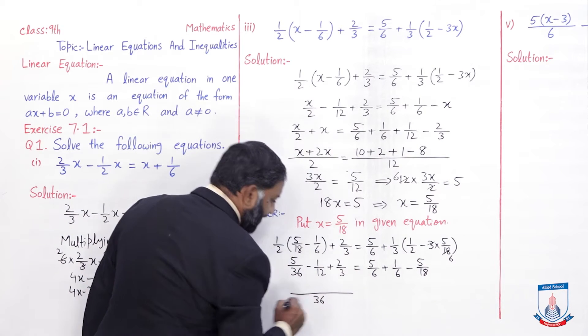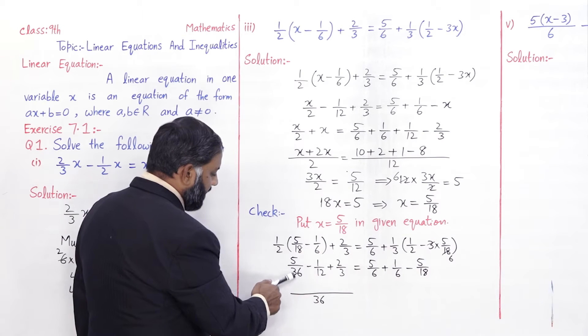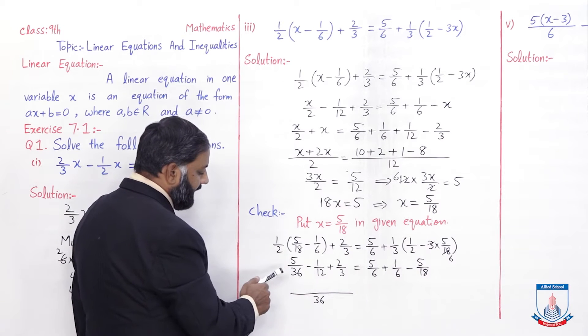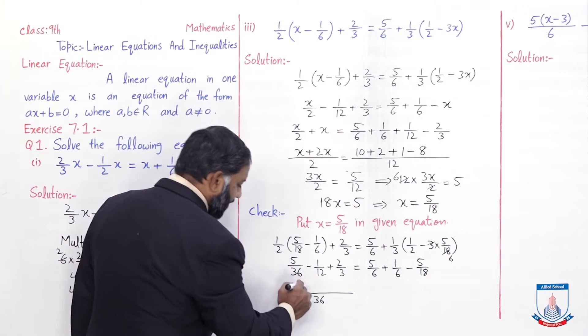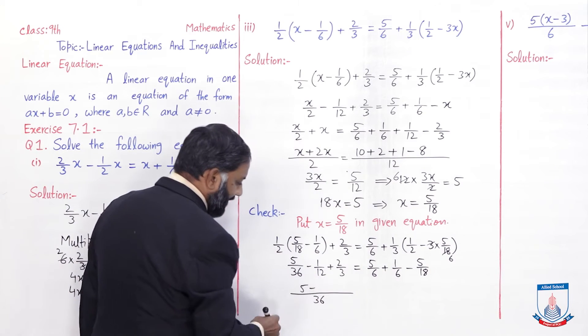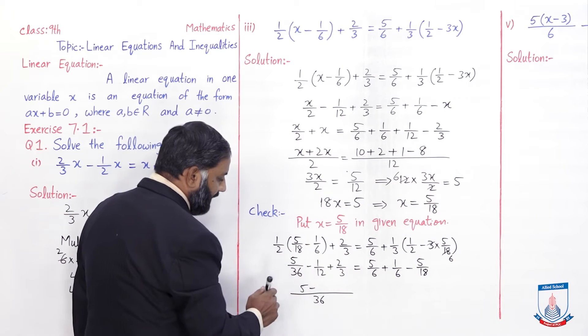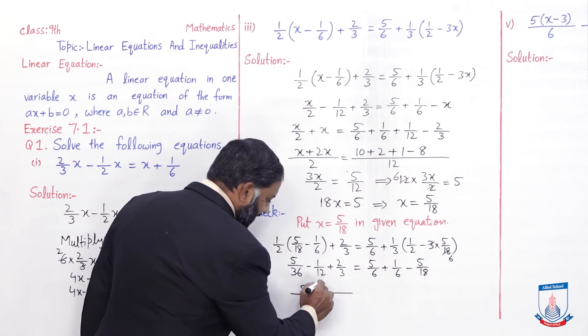LCM 36 aa jayega. Left side: 36 divided by 36 equals 1, times 5 equals 5. Minus 36 divided by 12 equals 3, times 1 equals 3. Plus 36 divided by 3 equals 12, times 2 equals 24.